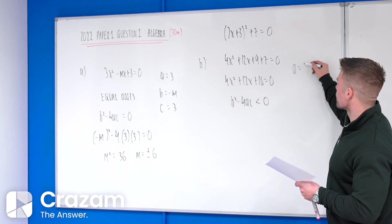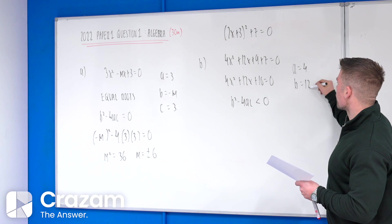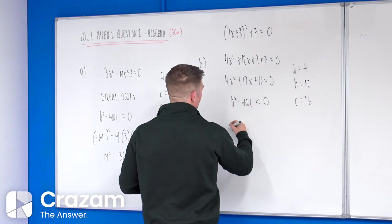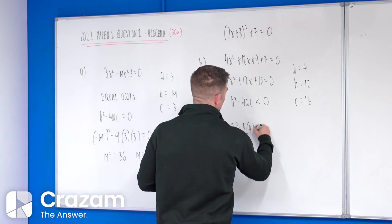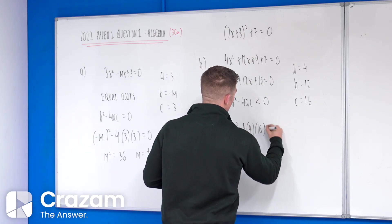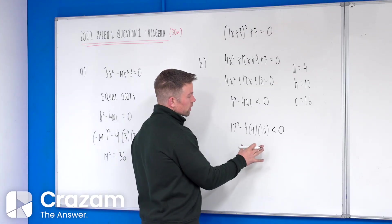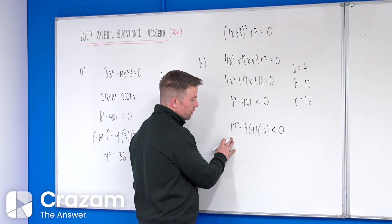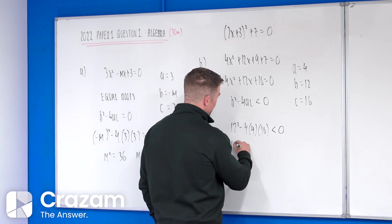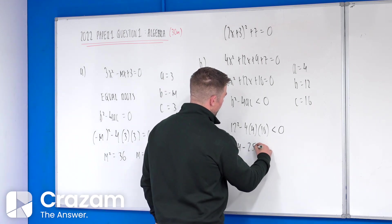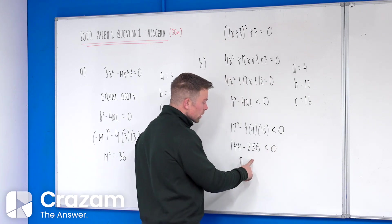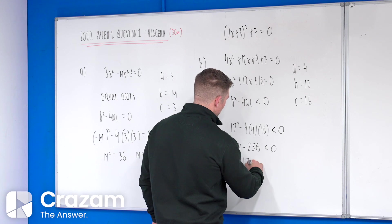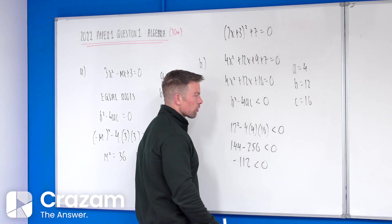Our A in this question is 4, B is 12, and C is 16. So if I throw it in here, 12 squared minus 4 times 4 times 16. Perfect. So if you put this entire left-hand side into your calculator, I think that's 144, and I think that's 256. You put it all in at once, though. If you take those away from each other, that gives you 112, but negative. And because that is less than 0,